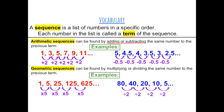Geometric sequences can be found by multiplying or dividing the same number to the previous term. Here is an example: 1, 5, 25, 125, 625, and so on is geometric because you have to multiply by 5 to get to the next term. These are both examples of geometric sequences.